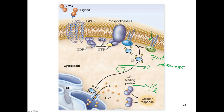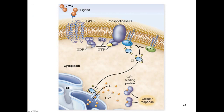IP3 as a second messenger causes the release of calcium from intracellular stores — the lumen of the endoplasmic reticulum — where calcium is stored at high concentrations. Calcium flows down its concentration gradient when particular calcium channels open in the endoplasmic reticulum membrane.